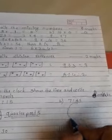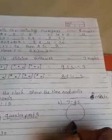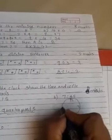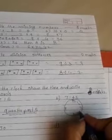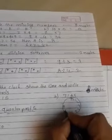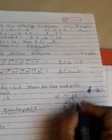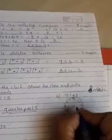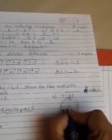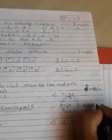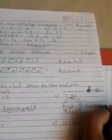Next clock: draw all the numbers. Big hand on nine and small hand a little bit before eight. Write: quarter to eight.